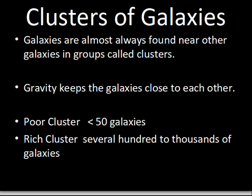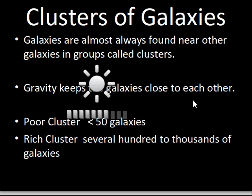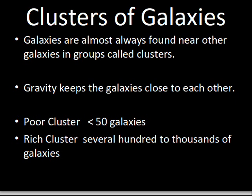In another video I'll talk more about galaxy collisions, but the distances between galaxies relative to the size of the galaxy is much, much smaller than the comparison of the distance between stars divided by the size of a star. What keeps galaxies next to each other in a cluster? That would be gravitation. A weak or poor cluster has less than about 50 galaxies, while a rich cluster would have several hundred to even thousands of galaxies gravitationally linked to each other. Our local group is on the poor cluster side.